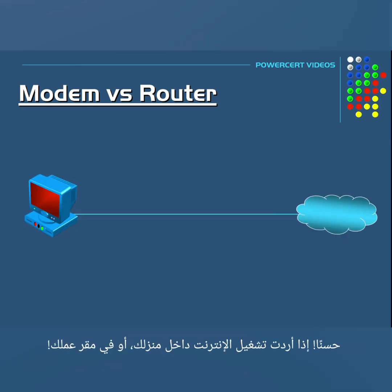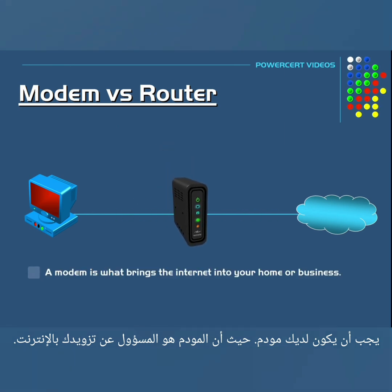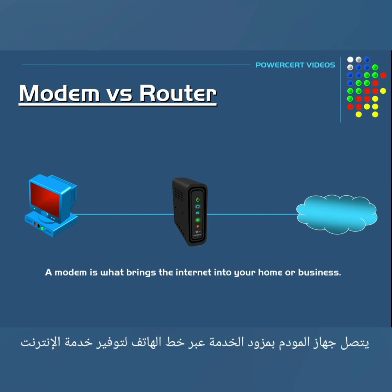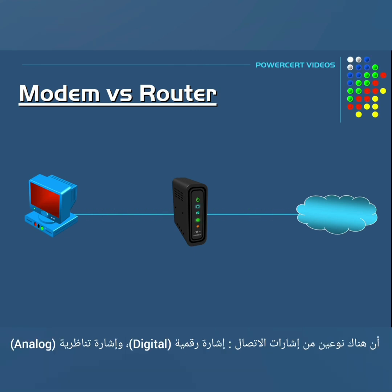Now if you want internet inside your home or business you have to have a modem. A modem is what brings the internet into your home or business. A modem establishes and maintains a dedicated connection to your internet service provider to give you access to the internet. Now the reason why you have to have a modem is because of the two different types of signals that are used on a computer and on the internet.